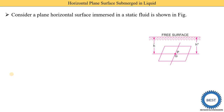Here we see this is the free surface and this is the horizontal plane surface submerged in water, and here we mention that it is a static fluid. What is the meaning of static fluid? Static fluid means between successive layers of the fluid there is no velocity. This is the first layer on the free surface, the second layer, third layer, and fourth layer — between these successive layers there is no velocity, so it is called a static fluid.